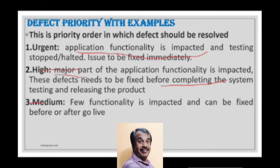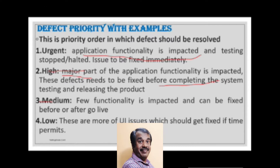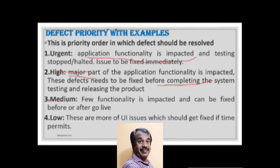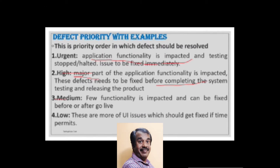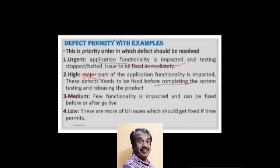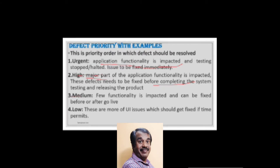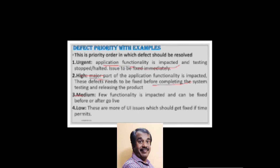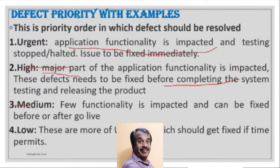The fourth priority level is Low. These are mostly UI issues which should be fixed if time permits for the development team. So these are the four important defect priorities: Urgent, High, Medium, and Low.